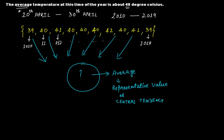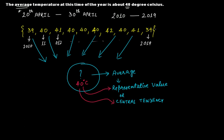In this case, if it is 40 degrees Celsius, then you can think that if the average temperature for the period between 20th of April and 30th of April, from 2010 to 2019, is 40 degrees Celsius, then it gives you a rough idea that the temperature during this period will be around 40 degrees Celsius. That is what a representative value is — this 40 degrees Celsius represents this set of data, or we can say it is the central tendency.